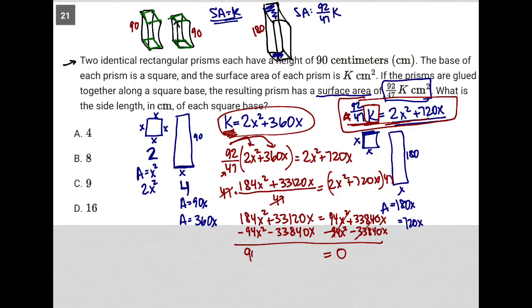So all this is gone, I just have equal 0. This becomes 90x squared. And then 33,120 minus 33,840 is negative 720x. And then divide everything by 90 here. So then I'd have x squared minus 8x equals 0, 90 goes into 90 once, into 720 eight times.